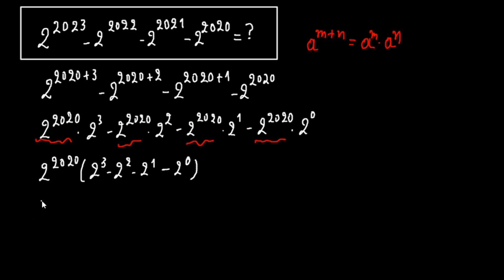And if we evaluate, we have 2 to the 2020 times, where the first term is 8, minus 4, minus 2, minus 1. Computing this gives us 2 to the 2020 times, 8 minus 4 is 4, minus 2 is 2, minus 1 is 1.